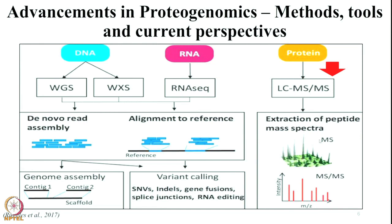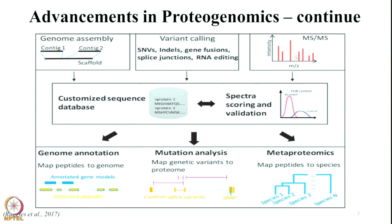After that, one more component is very important — that is protein. One can analyze the proteome database of an organism and then subject it to mass spectrometry to extract the possible spectra for all the proteins which are present and processed. Then the proteins obtained from mass spectrometry data can be analyzed using the reference database made from the information obtained from whole genome, whole exome, and RNA-seq data.